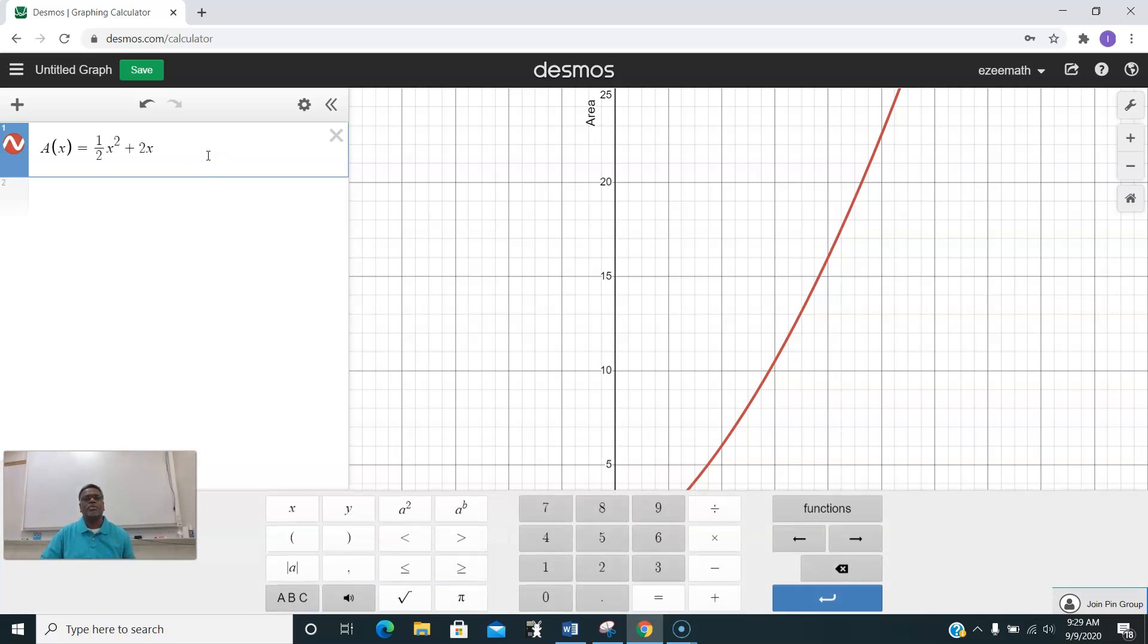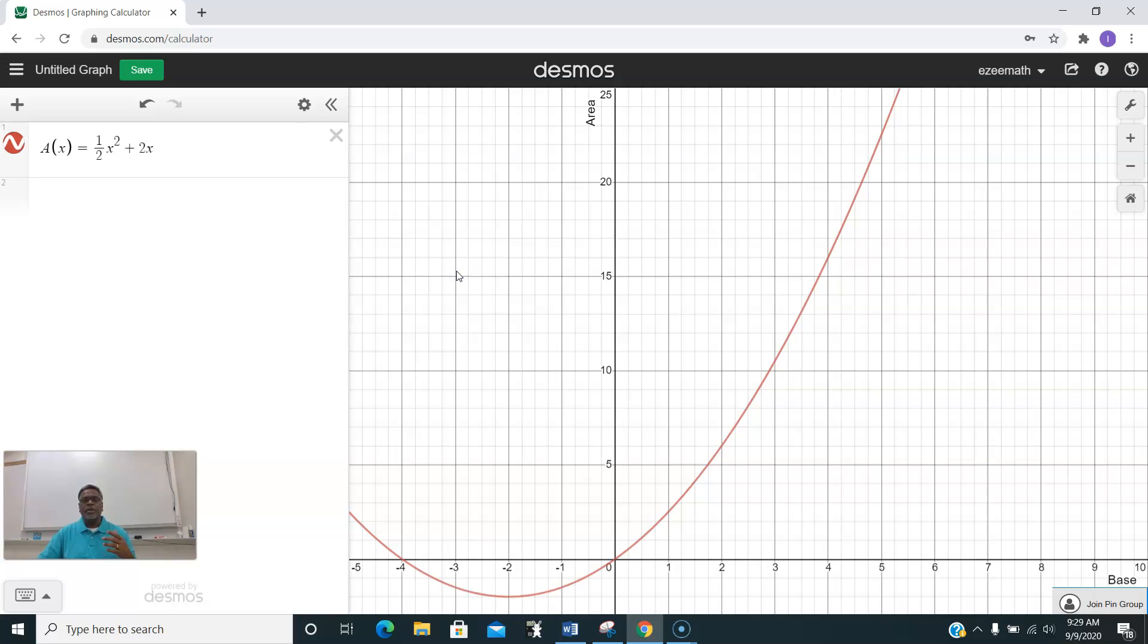Now you're looking for the domain and the range and what are all the other values that are relevant to this quadratic function. Let us see, and before that let me show you how to get the direct values for this area with reference to the base.